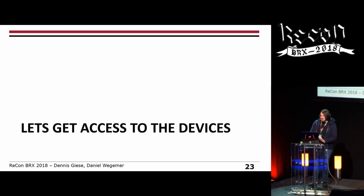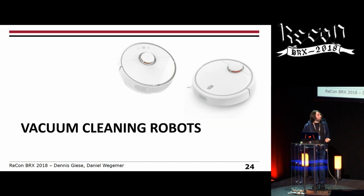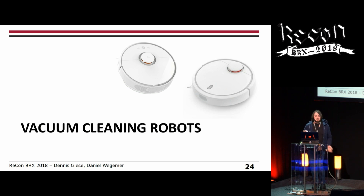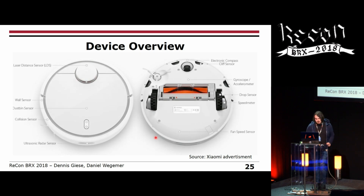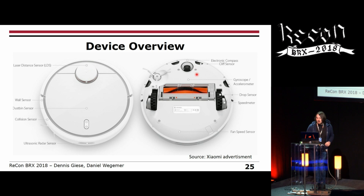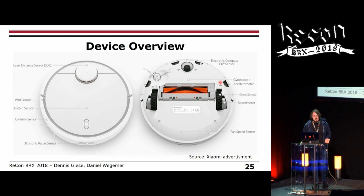Let's get access to the devices, starting with the vacuum cleaning robots. Both generations are technically similar internally, so it doesn't matter much which generation you have. The generation 1 has a lot of interesting sensors: a complete LiDAR sensor, which is very unusual for a product at around €250; an electronic compass; cliff sensors to prevent falling off stairs; and a gyroscope and accelerometer — stuff usually found in smartphones. This makes it a very nice platform.